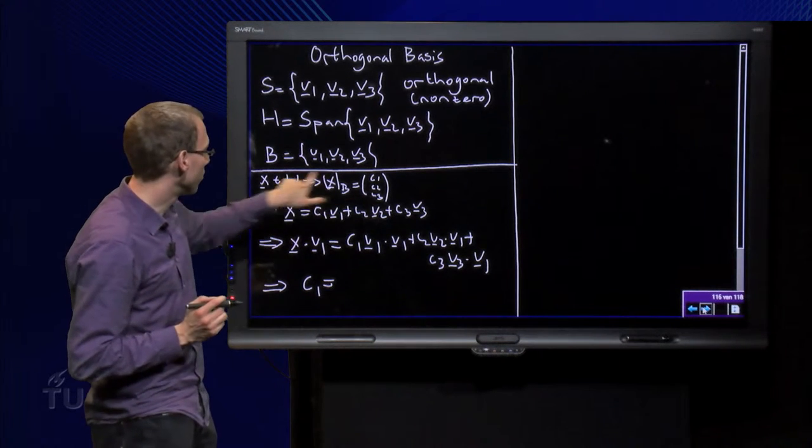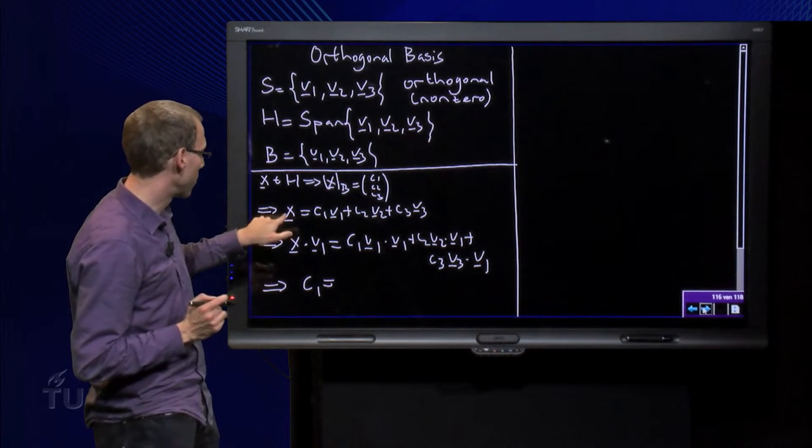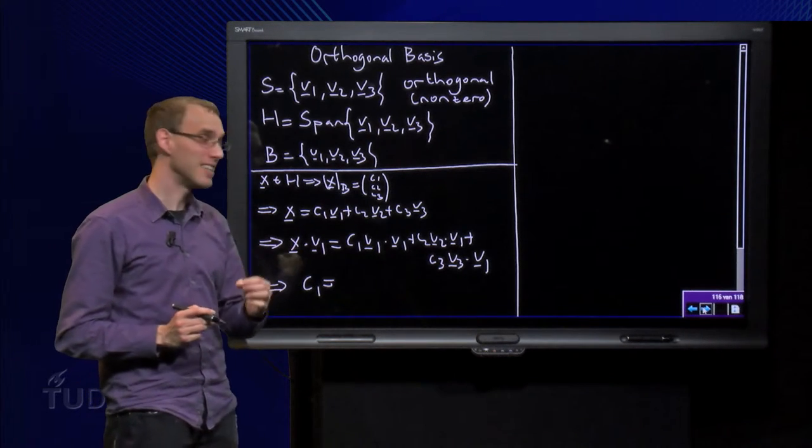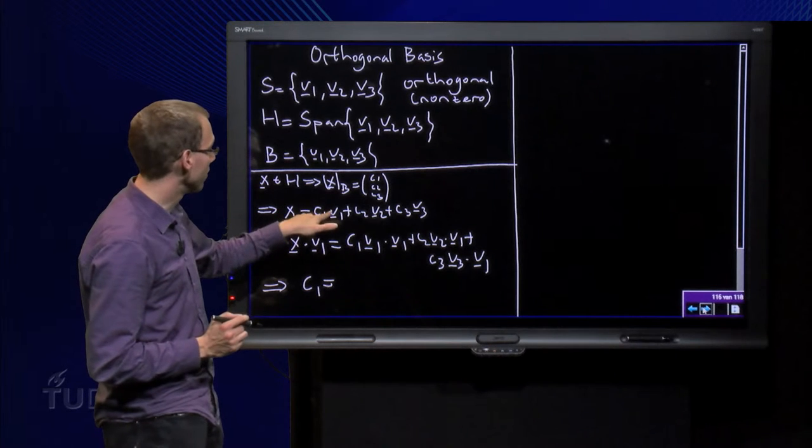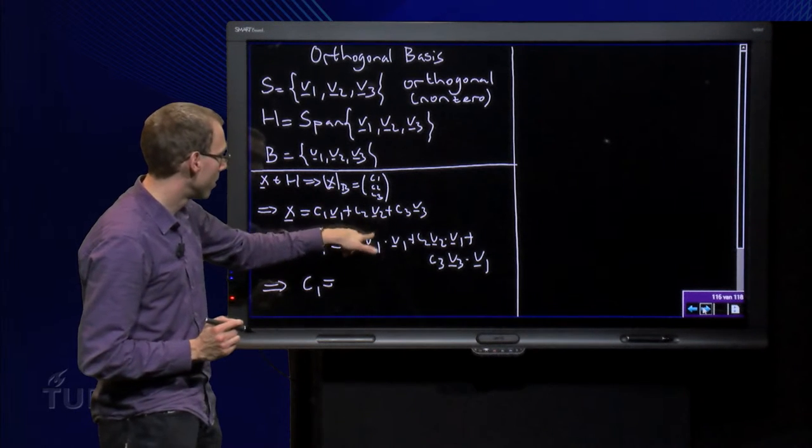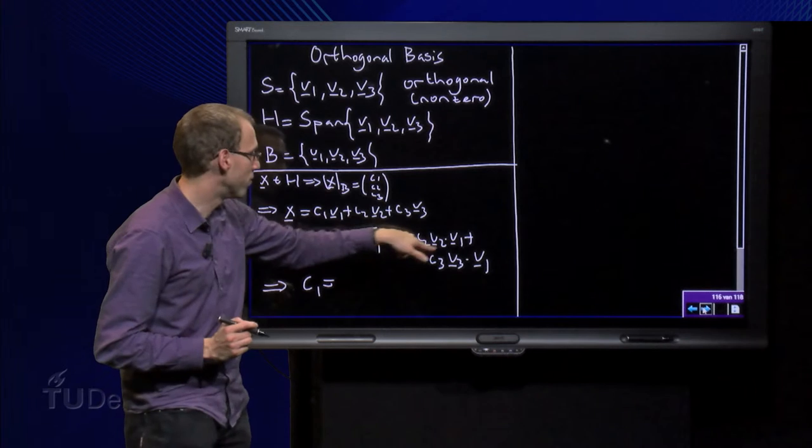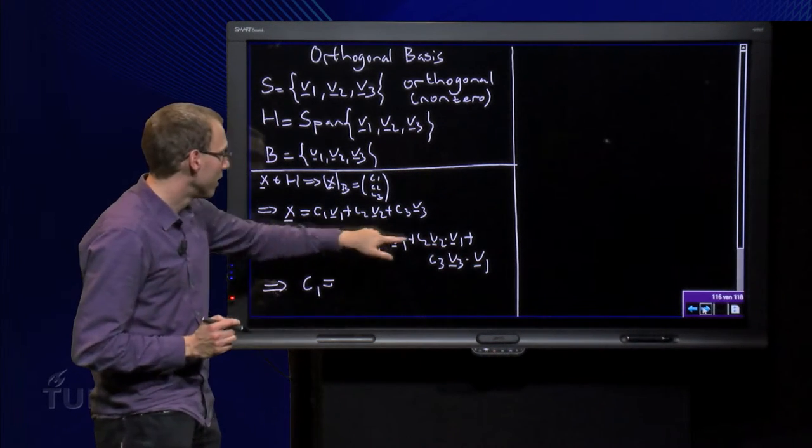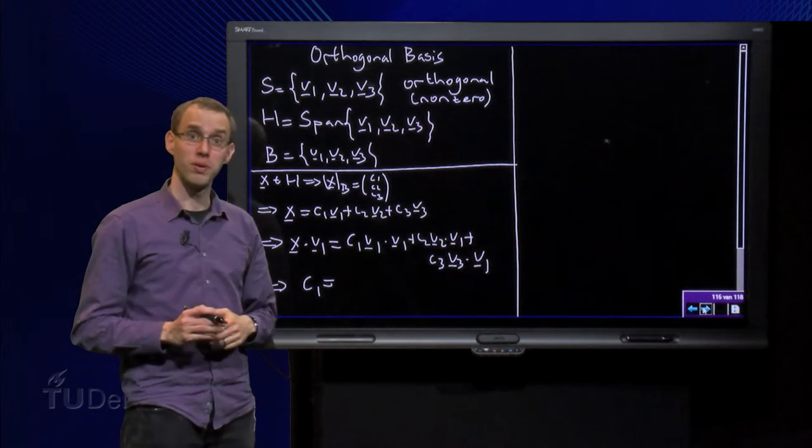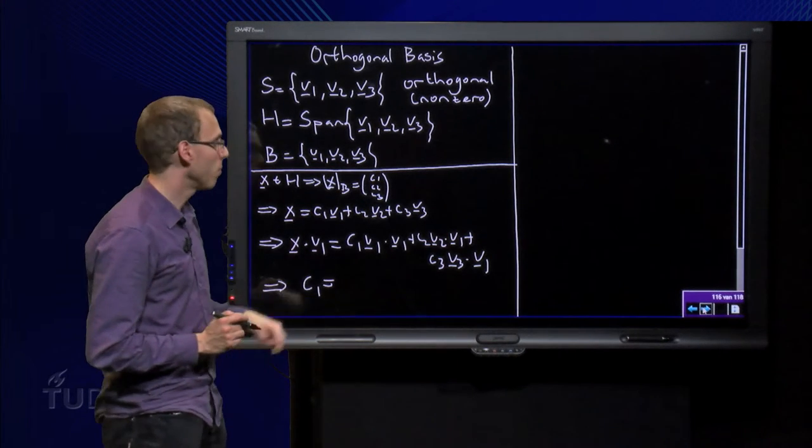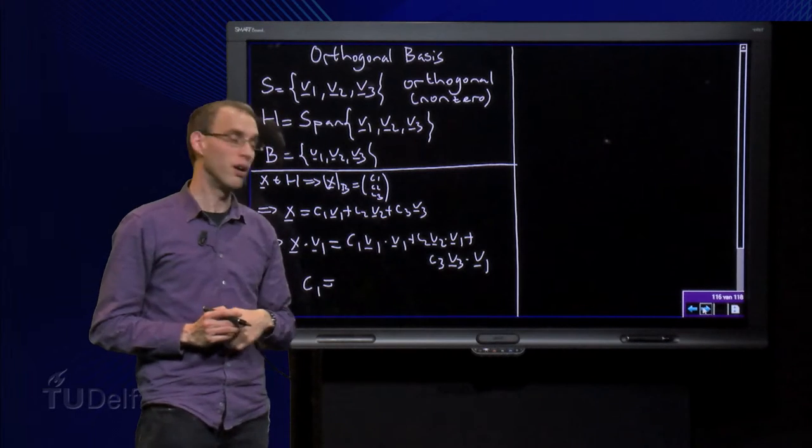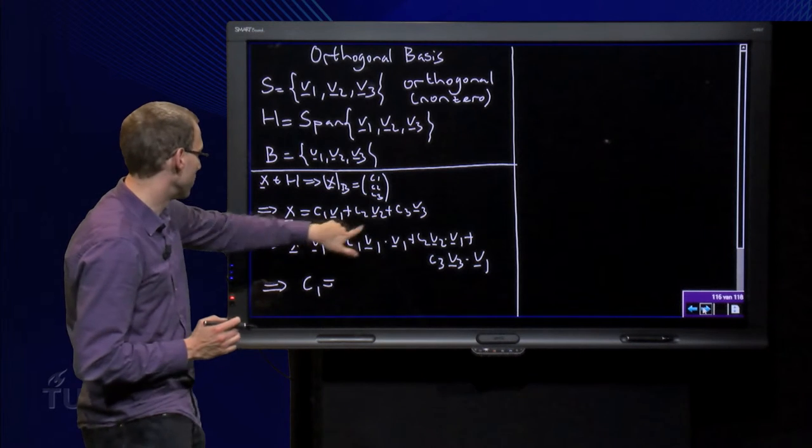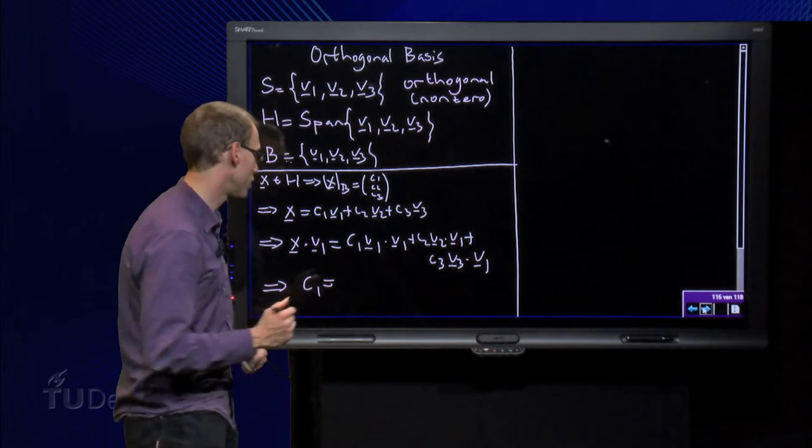We take the inner product of this equation with v1. Then we get on the left hand side x in v1, and on the right hand side we obtain c1 times v1 in v1 plus c2 times v2 in v1 plus c3 times v3 in v1. However, this term equals zero because v1 and v2 are orthogonal, and this term equals zero as well because v1 and v3 are orthogonal. So only the first term is left and we can solve for c1.